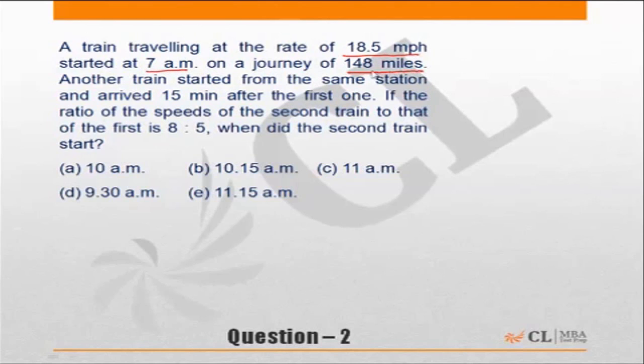of 148 miles. Another train started from the same station and arrived 15 minutes after the first one. If the ratio of the speeds of the second train to the first is 8 is to 5, when did the second train start?